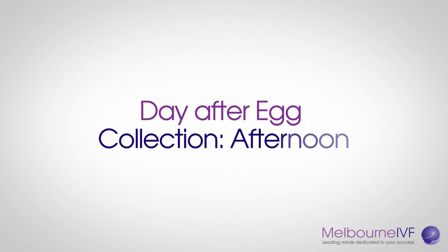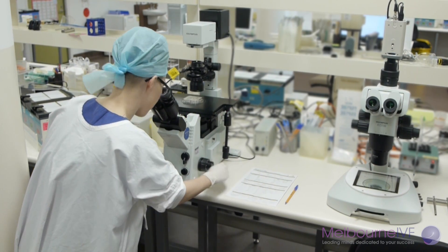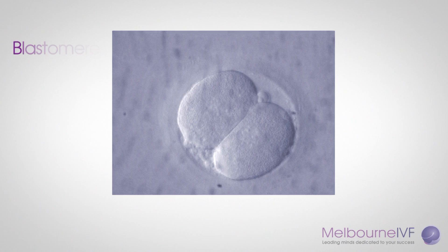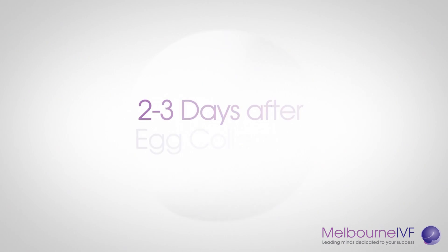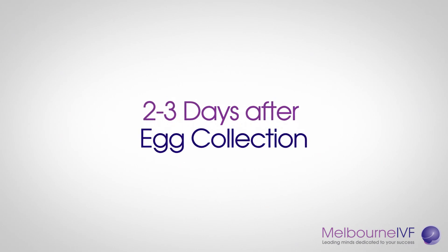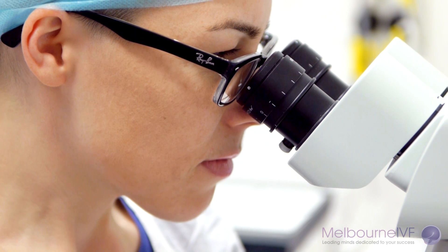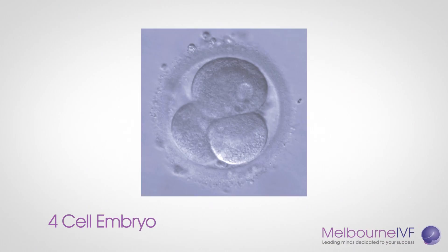The day after egg collection — afternoon. Embryos are then assessed towards the end of the day to determine if they have developed beyond the pronuclear stage. Here we see a fertilised egg which has gone beyond the pronuclear stage and divided, resulting in two cells called blastomeres. Two to three days after egg collection, over the next two to three days the embryos will continue to develop in the laboratory. This four-cell embryo has further divided, resulting in four blastomeres.